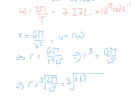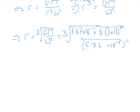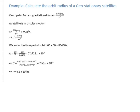Substituting the values — G equals 6.67 times 10 to the minus 11, mass of Earth equals 6.0 times 10 to the 24 kg, and omega equals 7.27 times 10 to the minus 5 radians per second — we get r equals the cube root of that expression, which gives 4.2 times 10 to the 7 meters. The answer is given to two significant figures, consistent with the two sig figs used for the mass of the Earth and the 24-hour time period. A typed-out solution is also provided on screen.